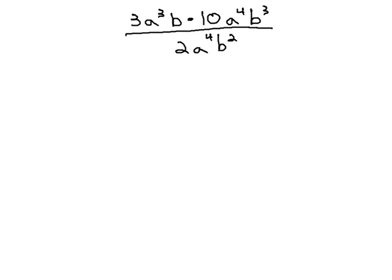Order of operations asks us to do parentheses first. And while there are no obvious parentheses on this problem, we remember whenever we see a fraction, there's an invisible set of parentheses around the numerator and denominator, suggesting we should simplify completely the numerator and denominator first, before we worry about the fraction.